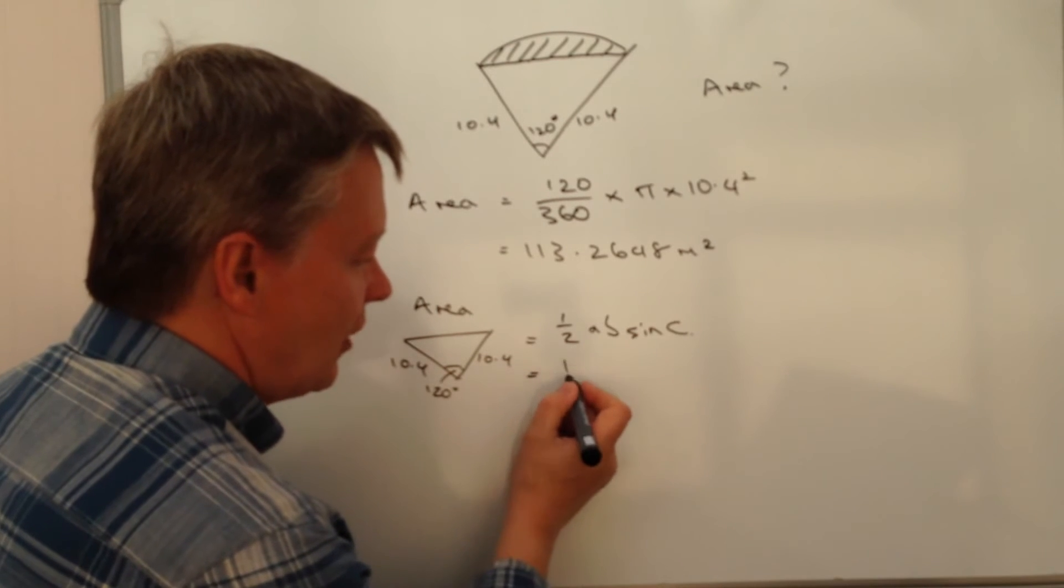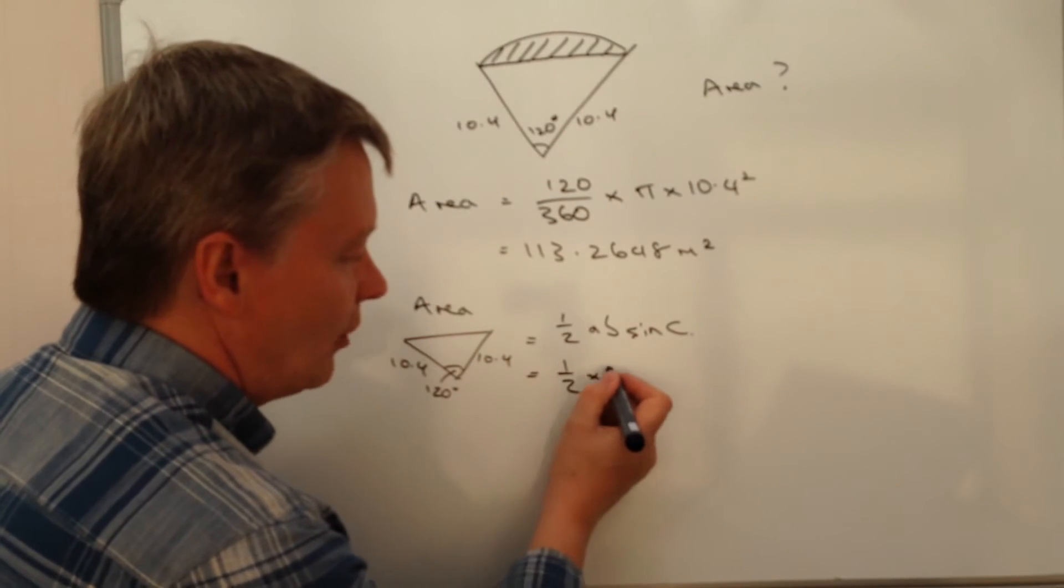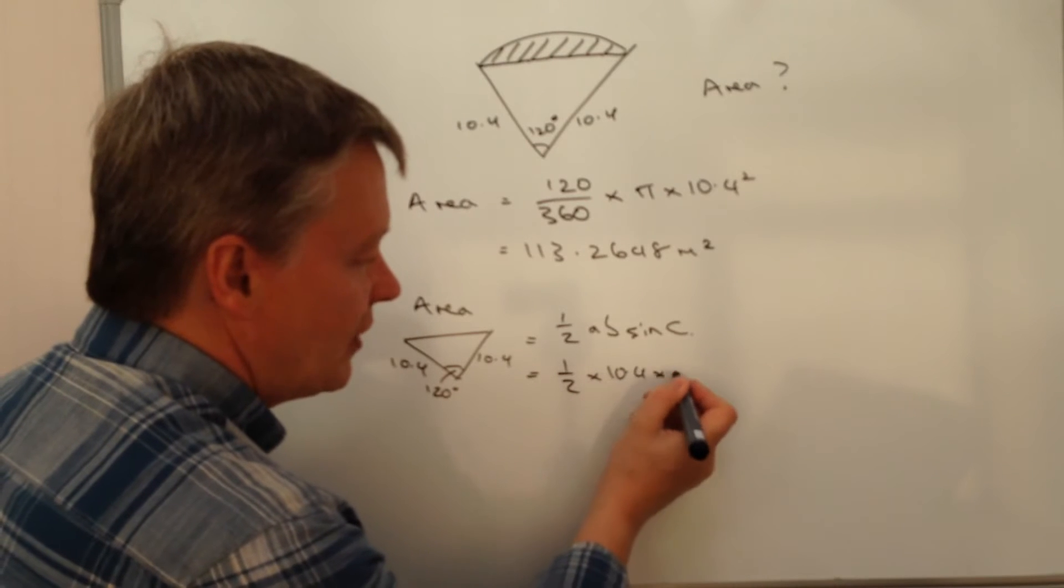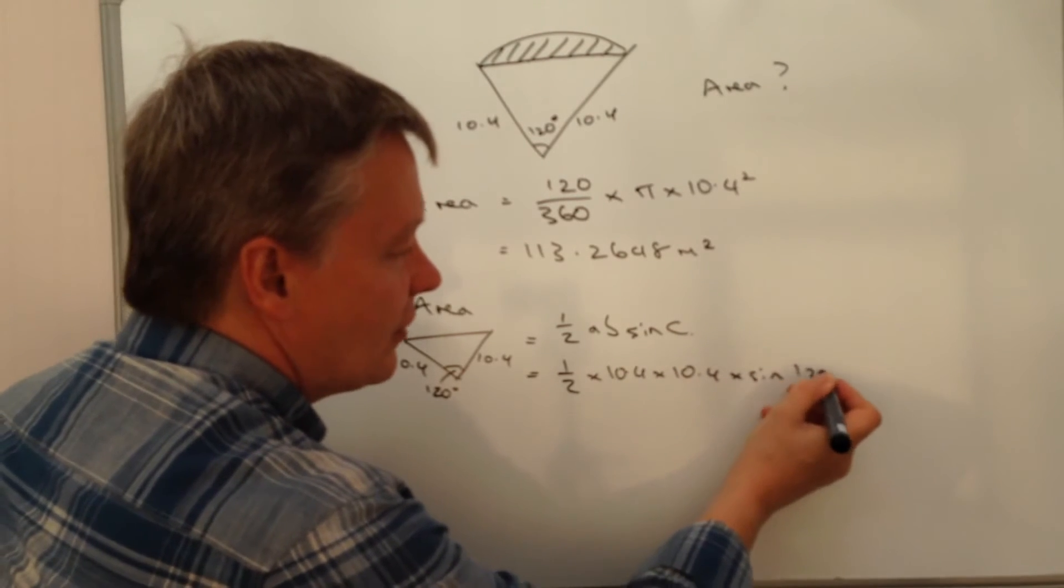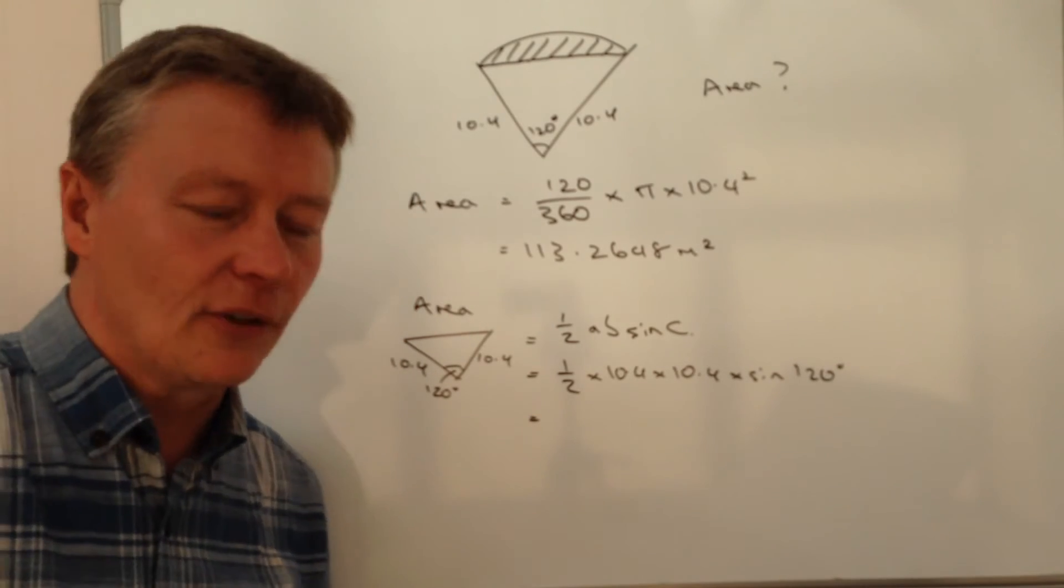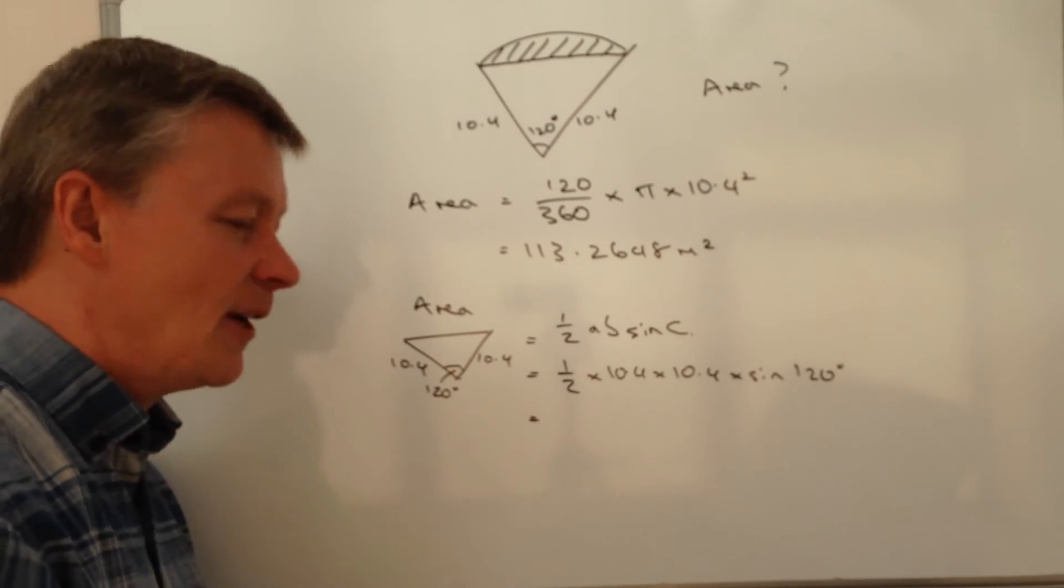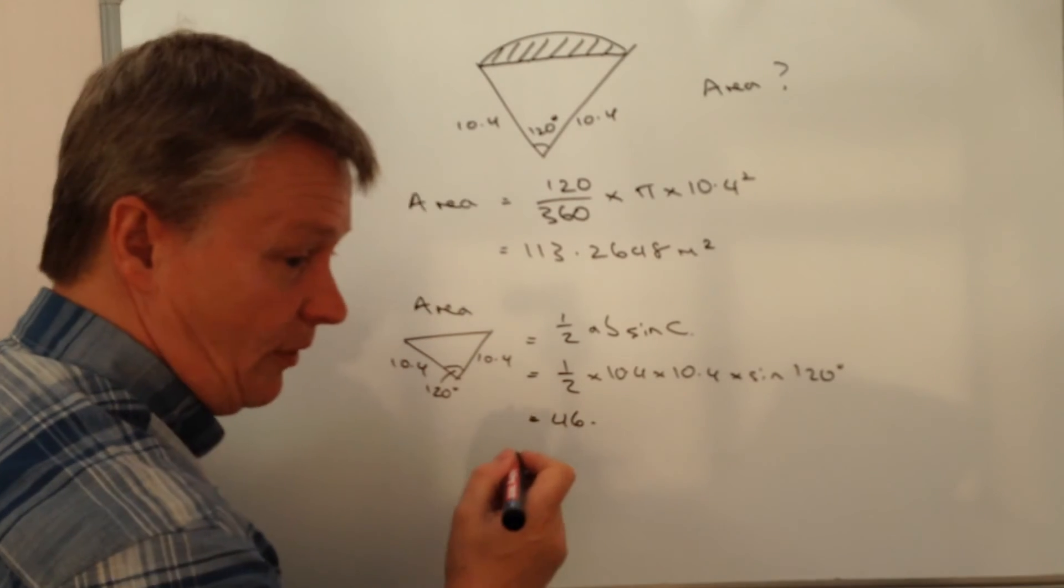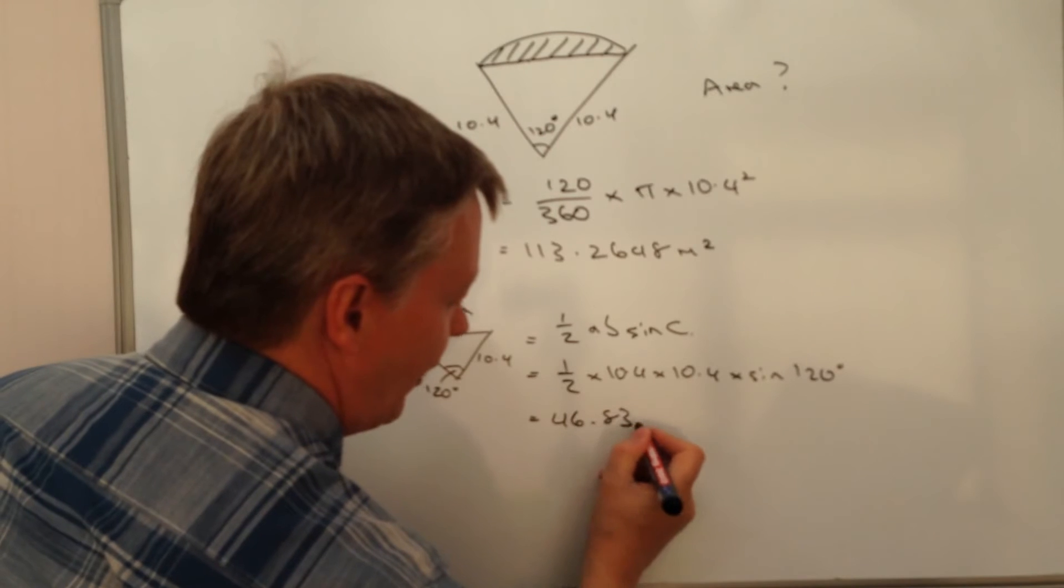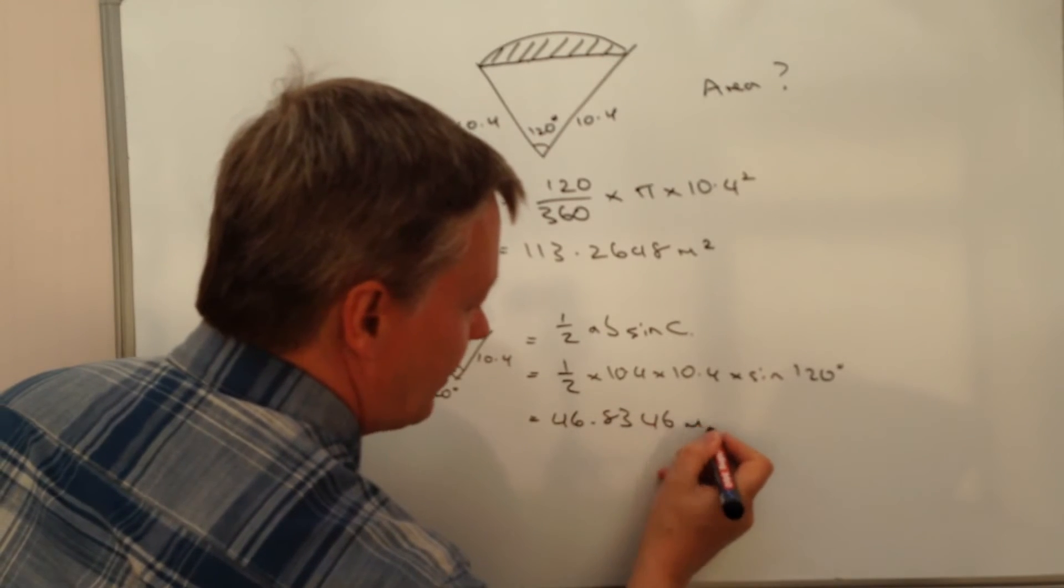So I'm going to plug those numbers straight in. I've got a half multiplied by 10.4 times 10.4 times the sine of 120 degrees. And if I put that into my calculator, I end up with a very long, very boring number, which is 46.8346 meters squared.